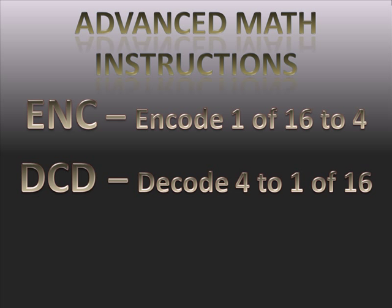Meaning that if you're decoding 4 bits and all four bits are zero, the value is 0 — it'll turn on the first bit in the 16-bit destination, because that's bit 0.